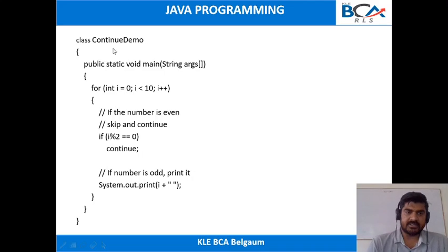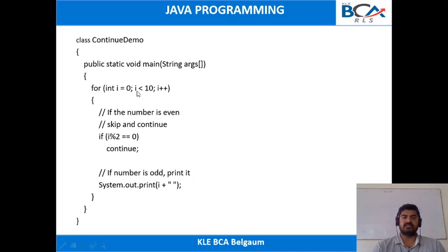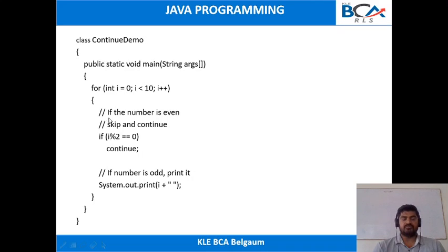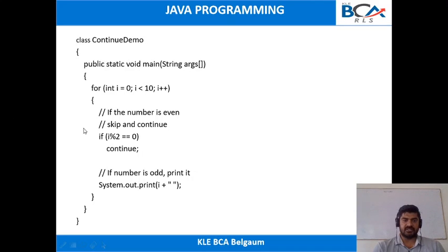Here we created a class called ContinueDemo. Inside the main method, we created a for loop: for i equal to 0, i less than 10, and i plus plus. We are displaying the odd numbers between 0 to 10. Inside this for loop, we have the condition: if i % 2 == 0. This means whenever i is even, we are skipping the execution. The continue statement transfers control back to the for loop.